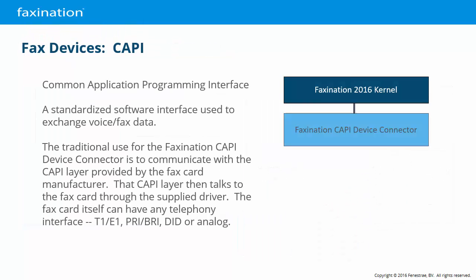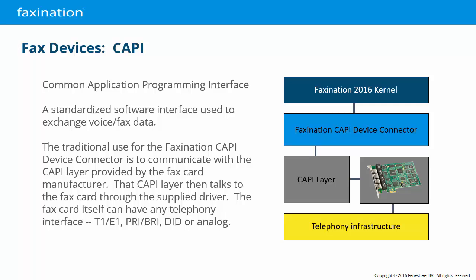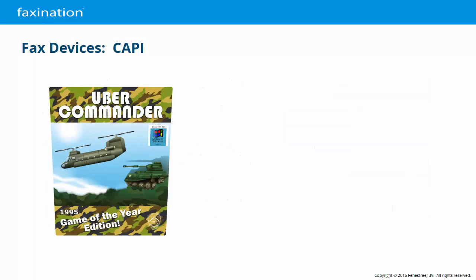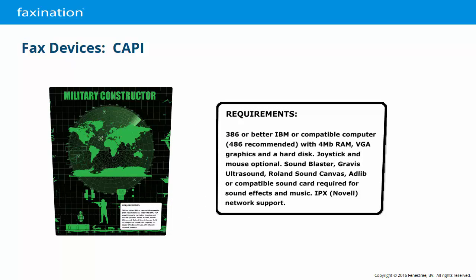Moving on to CAPI. Typically, the FaxNation CAPI device talks to a CAPI layer provided by the card manufacturer. The actual line configuration is done within the software that comes with the card or downloaded from the manufacturer's website. FaxNation has no knowledge of the type of telephony system that the CAPI layer is connecting to. CAPI is analogous to DirectX: game developers only needed to include support for DirectX — they didn't need to know anything specific about your computer hardware. Similarly, FaxNation's CAPI device connector talks to the CAPI layer, which then talks to the fax card, and FaxNation has no knowledge of the fax hardware or line type.